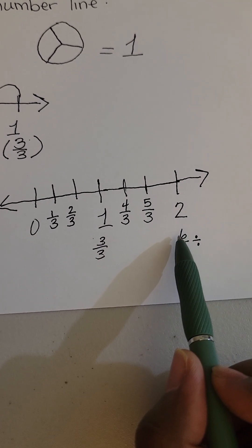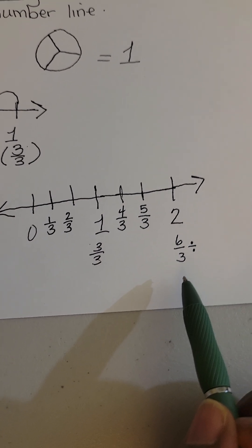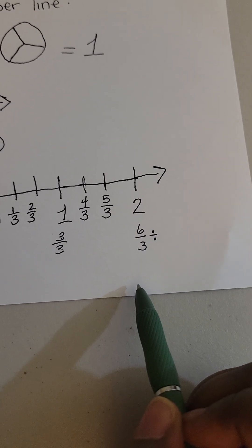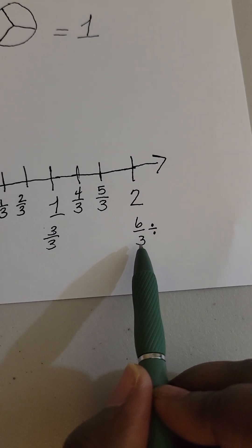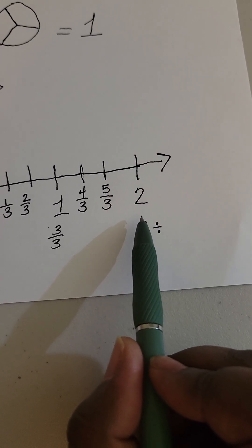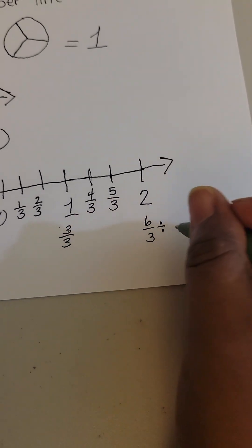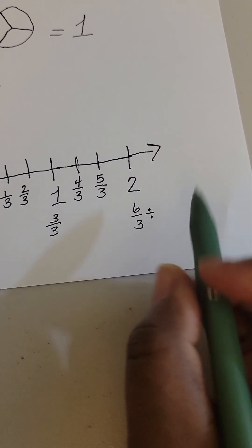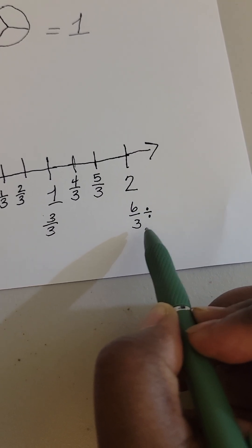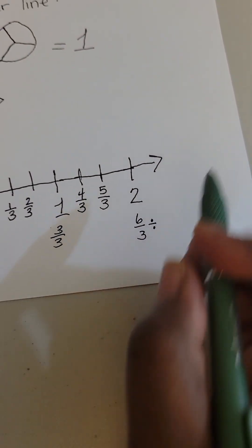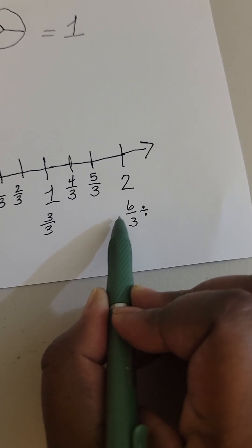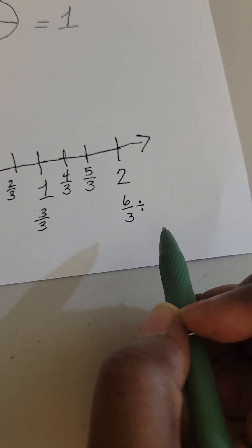I'm going to look at 6 and I'm going to look at it as a multiple, and I'm going to look at 3 as a factor. Can I multiply anything times 3 and get 6? Yes, 2. So I know that 6 is a multiple of 3. 3 times 2 is 6, so 6 is a multiple of 3.